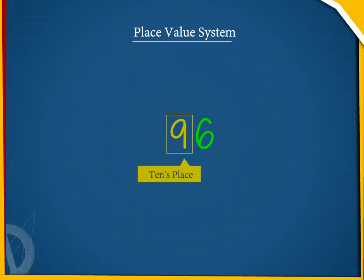It tells us that there are 9 tens. The digit at the extreme right, that is 6, is the ones digit.